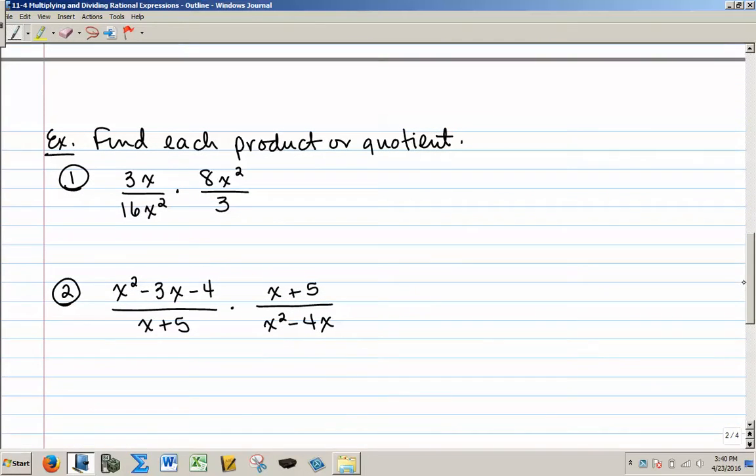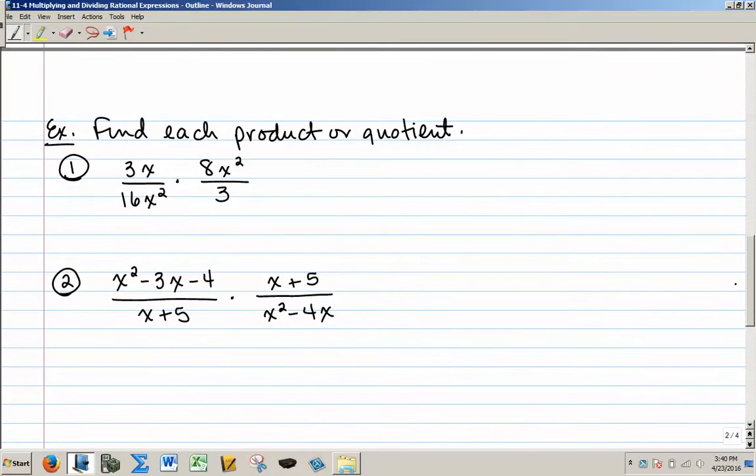So let's find each product or quotient. For number one, I have 3x over 16x squared times 8x squared over 3. Since there's no addition or subtraction in this problem, it's all multiplication, the coefficients times the variables, and division within the fractions, I can just go ahead and cancel.